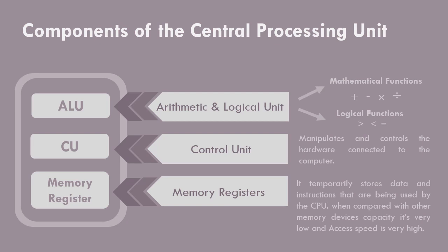Components of the Central Processing Unit. The Central Processing Unit consists of three main components. First, ALU — Arithmetic and Logical Unit — which performs mathematical and logical functions.